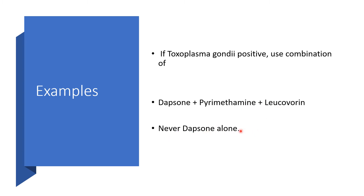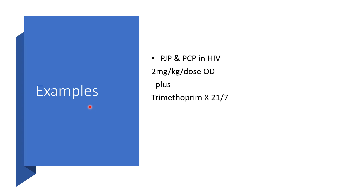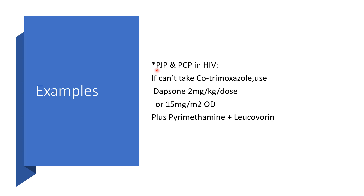Another example: in Pneumocystis jirovecii pneumonia in HIV, you can use Dapsone 2 mg/kg/dose once daily plus trimethoprim for 21 days. For PCP prevention in HIV, if the patient cannot take co-trimoxazole, use Dapsone 2 mg/kg/dose or 15 mg/m² once daily plus pyrimethamine and leucovorin.